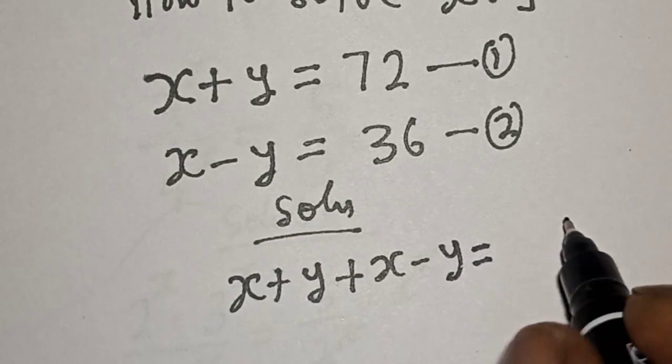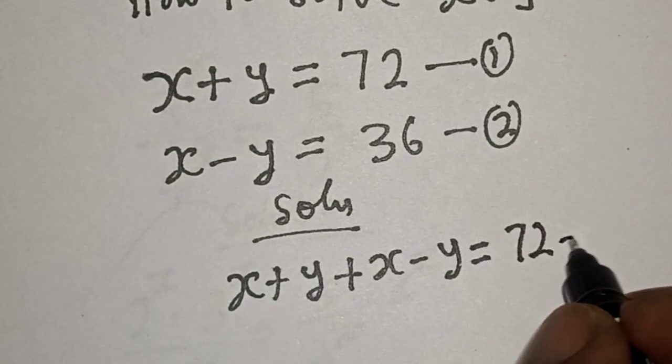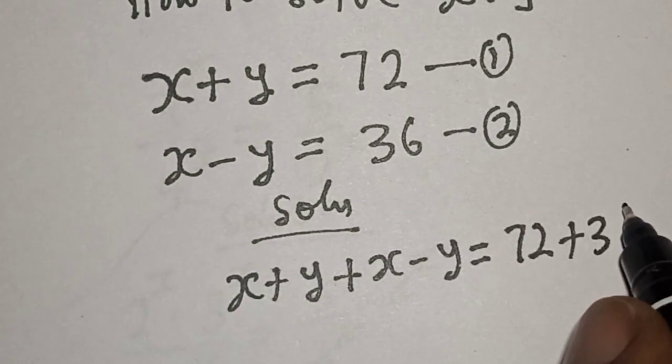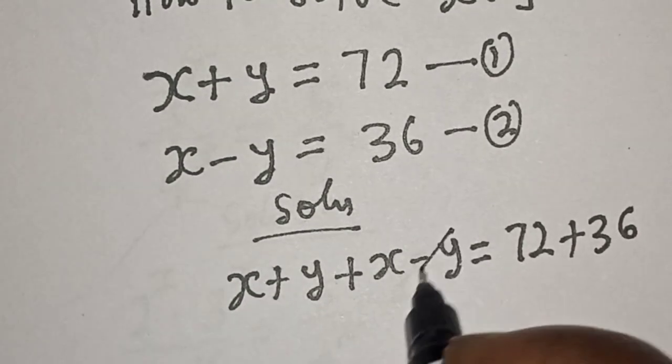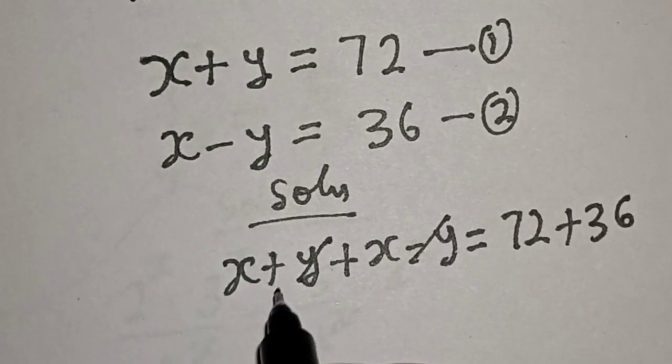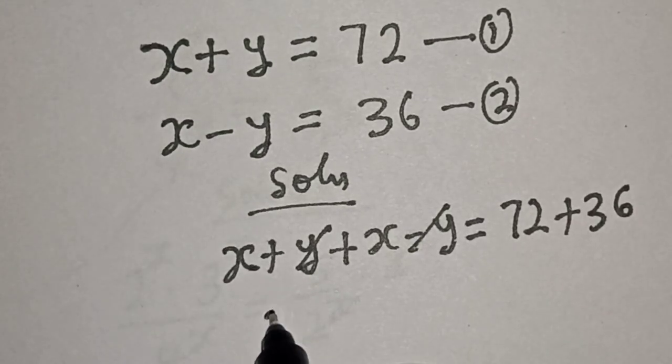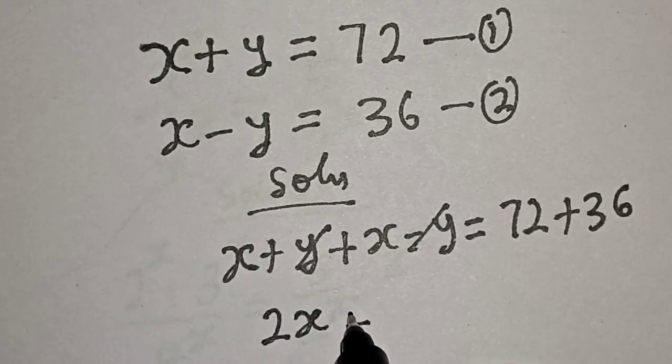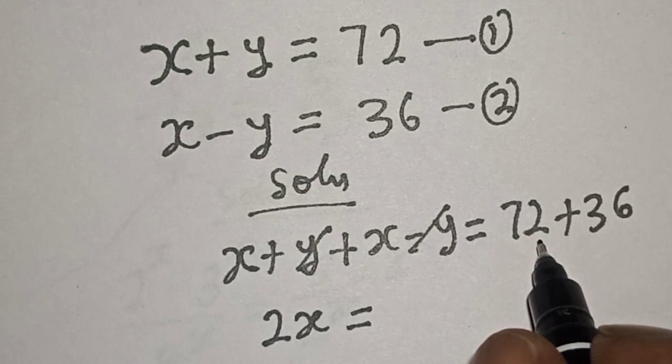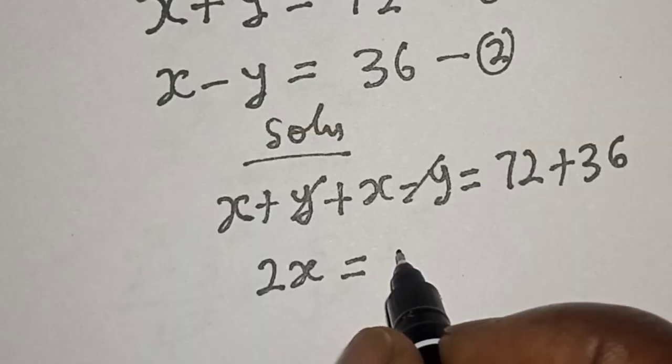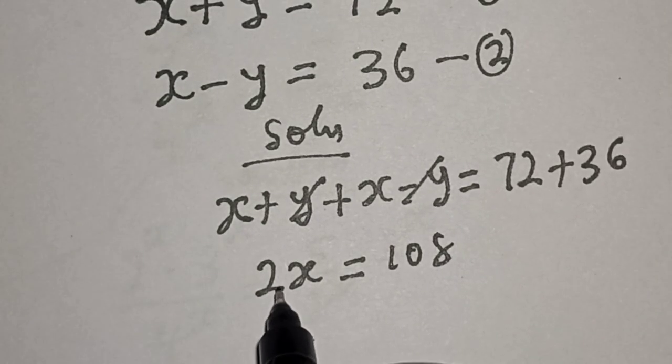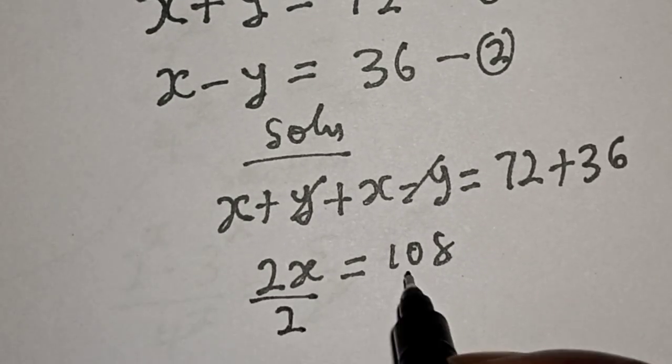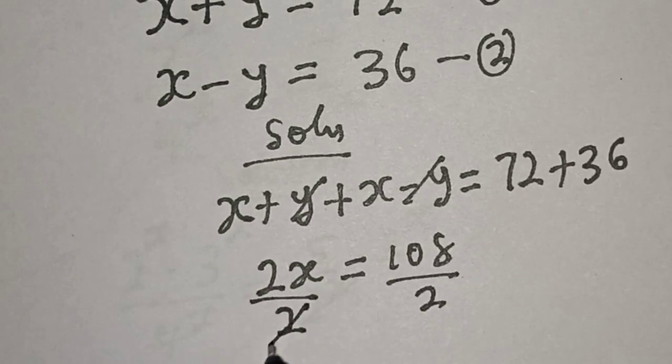equals 72 plus 36. And this comes to x plus x, which is 2x, equals 108. Now let's divide both sides by 2. 2x divided by 2, 108 divided by 2.